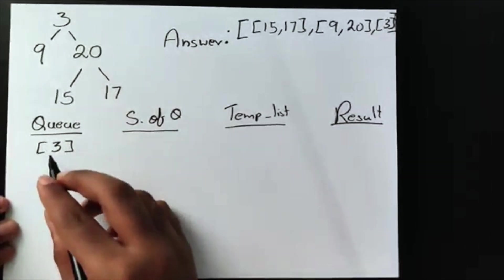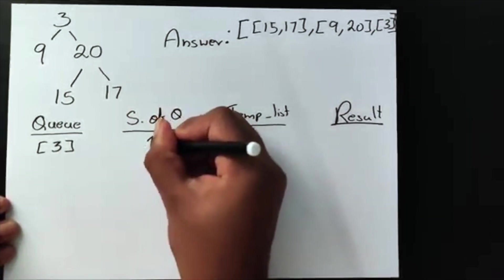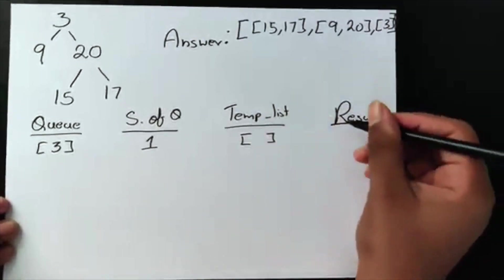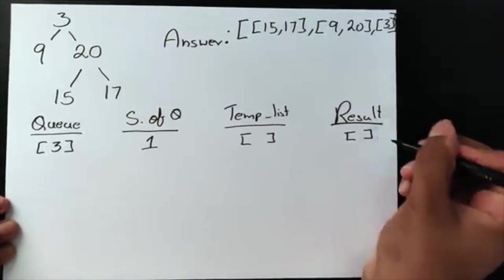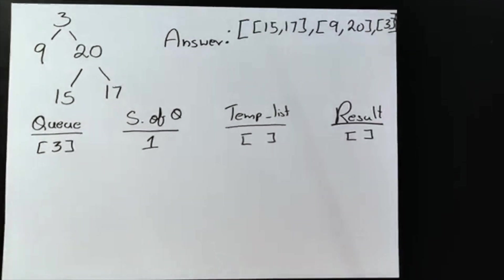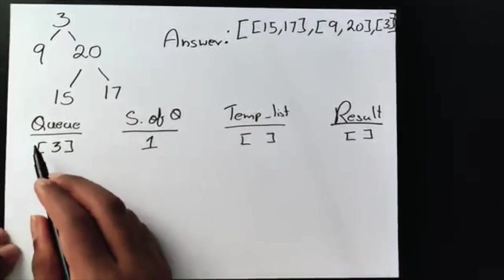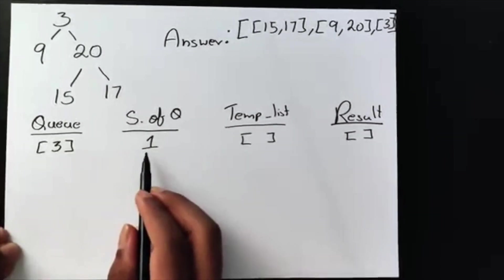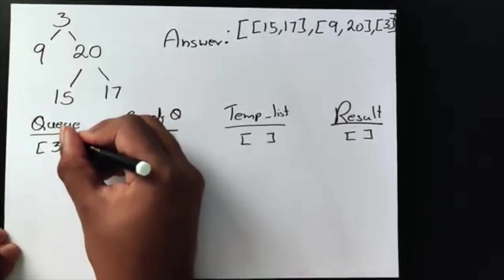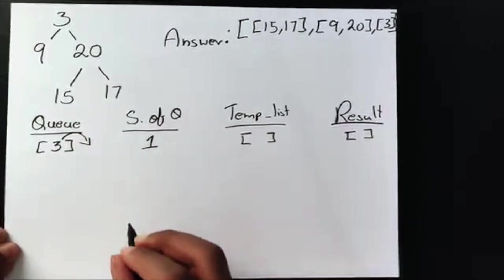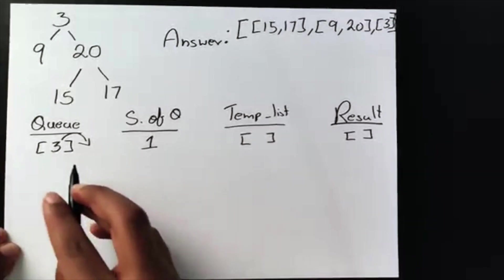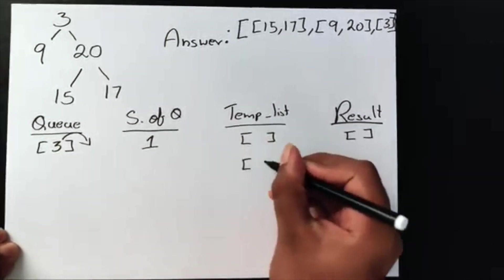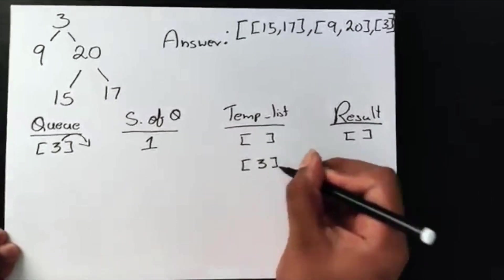So our queue is going to contain 3. The size of our queue is 1. The temp is going to be an empty list for now, and so is the result. We need to perform the pop function a total of one time because the size of the queue is 1. So now we're going to pop off 3 and dequeue it, then add it to our temporary list.